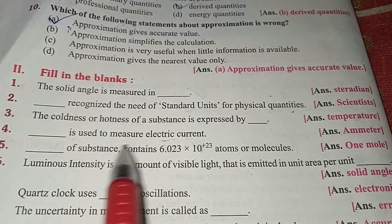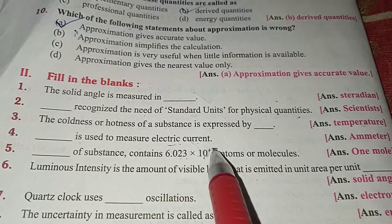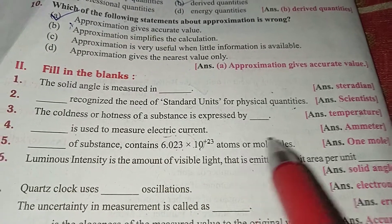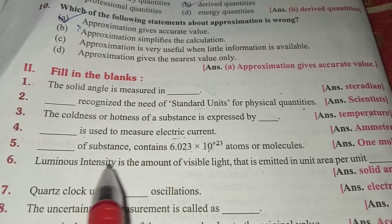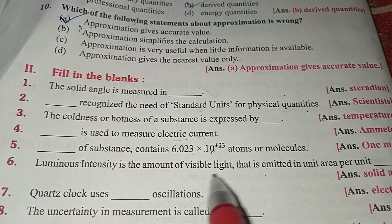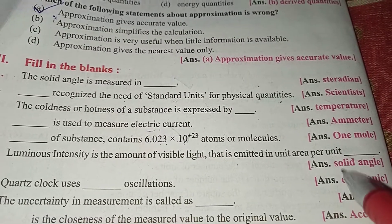One mole of substance contains 6.023 into 10 power 23 atoms or molecules. Luminous intensity is the amount of visible light that is emitted in unit area per unit solid angle.